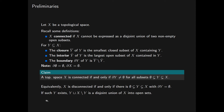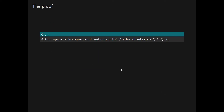It is also the case that if such a subset Y exists, then Y disjoint union X-not-Y is a disjoint union of X into open subsets — so both this set and this set are open. So let's go ahead and prove this claim.